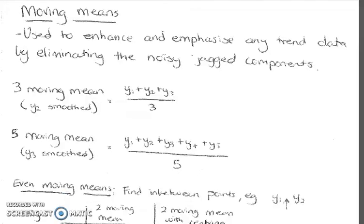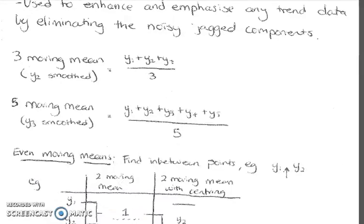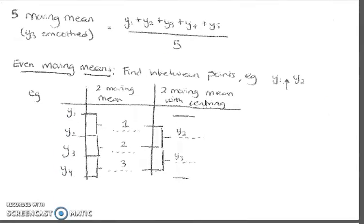They may ask you for three moving mean, five moving mean, etc. However many data points they're asking for, for example three, you take the average or the mean of those three data points. If it's five, we take five data points and keep moving along the line. Here's an example of how you would show your moving mean with centering.